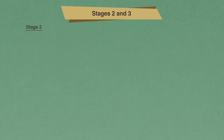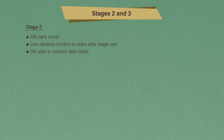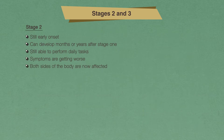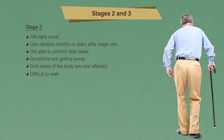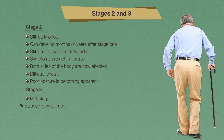Stage two of PD is still considered to be early onset of the disease. Stage two may develop months or even years after stage one. At this stage, you are still able to perform daily tasks fairly well; however, the symptoms are starting to get worse. Both sides of your body are now being affected, making it difficult for you to walk, and poor posture is becoming more apparent.